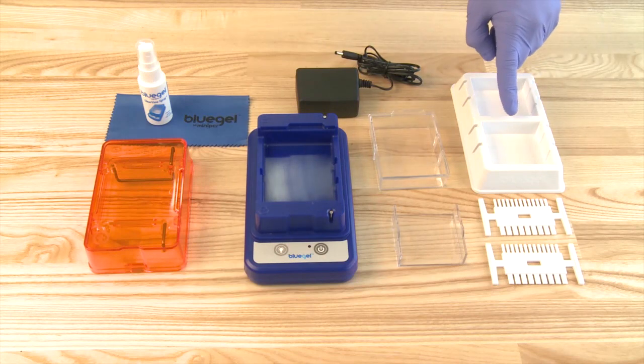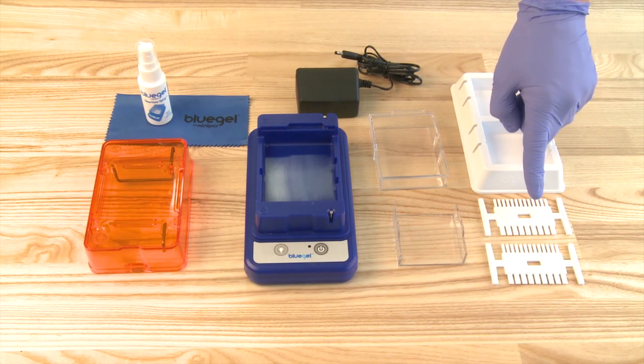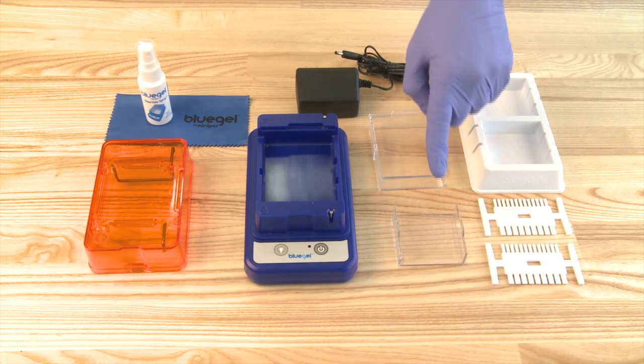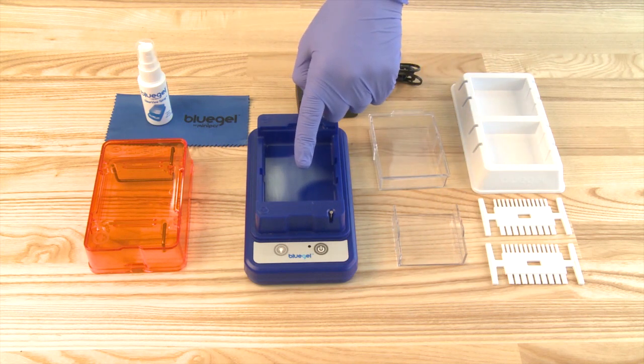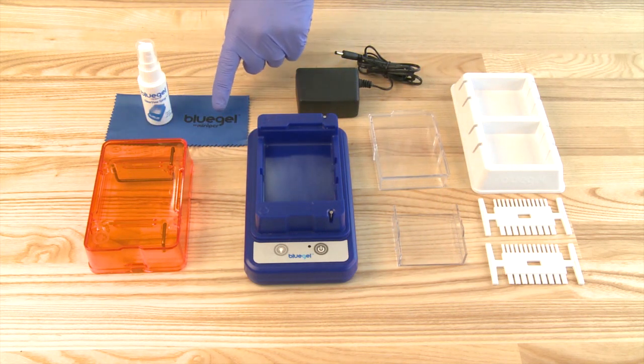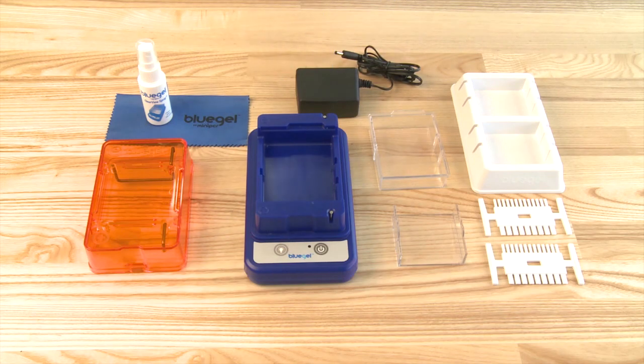Your system includes gel casting platform, two combs, a buffer chamber, a gel tray, a blue base, an orange cover, a cleaning cloth, clear view spray, and a power supply.